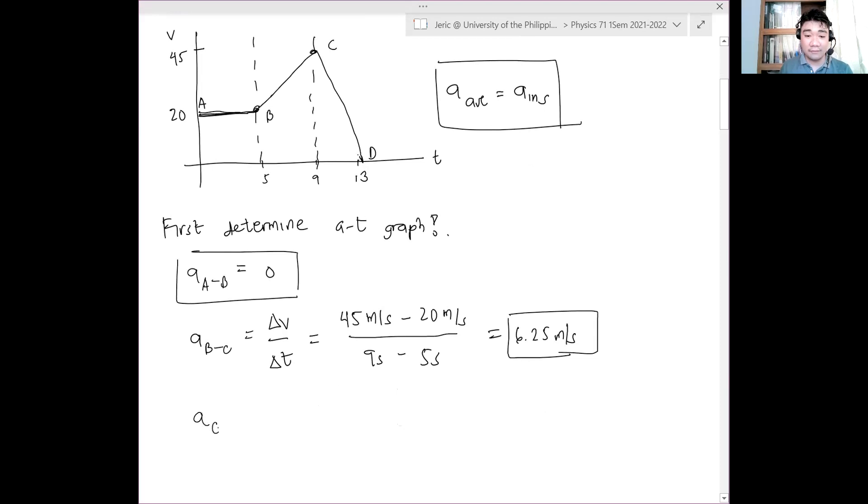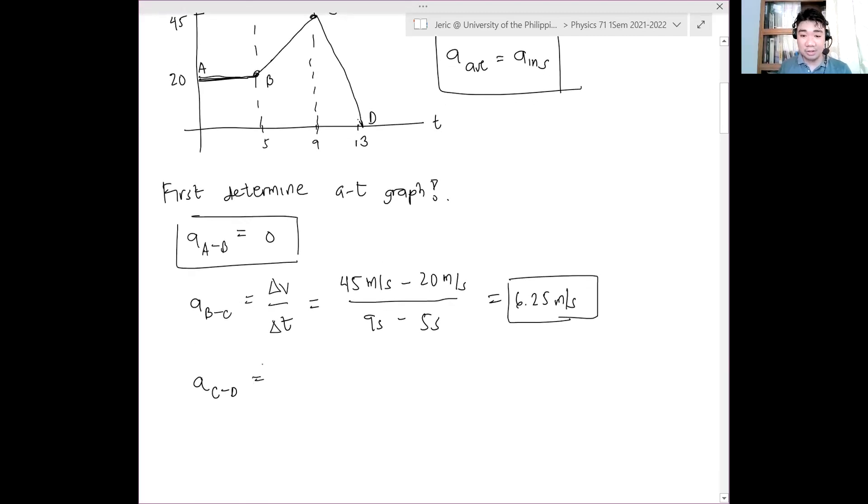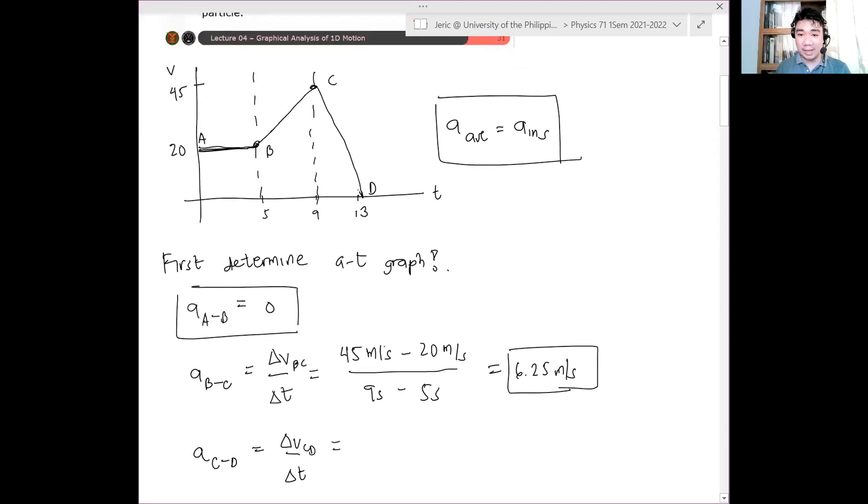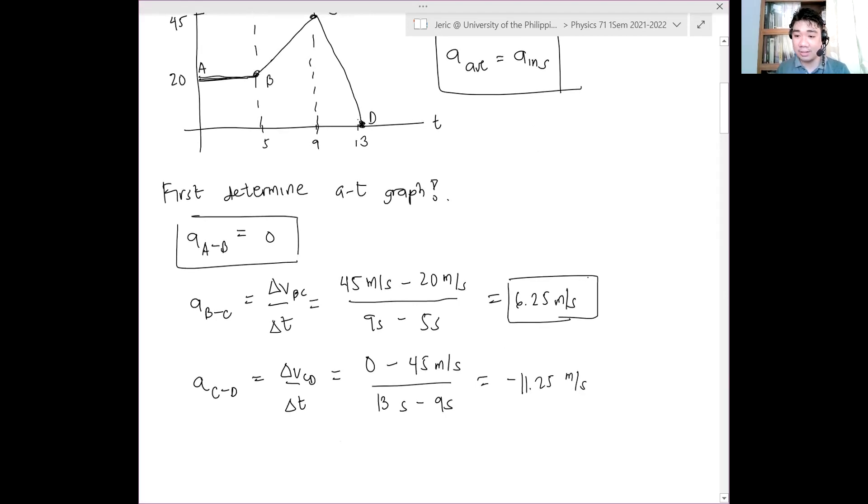What about the acceleration from C to D? Note that the slope is negative. Therefore, we should expect that the acceleration is negative. It decelerates because the velocity values are still positive but the slope is negative. A from C to D is just delta V over delta T, which is equal to zero minus 45, divided by 13 seconds minus 9 seconds, which equals negative 11.25 meters per second squared.